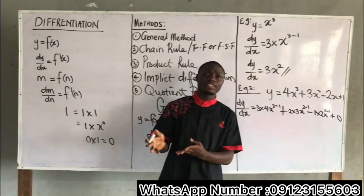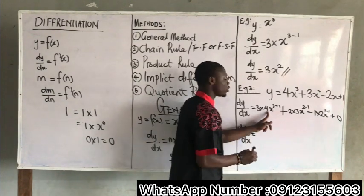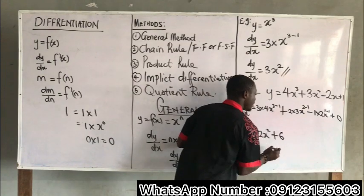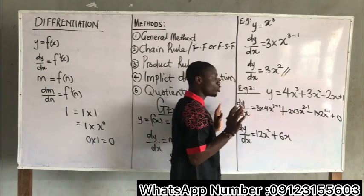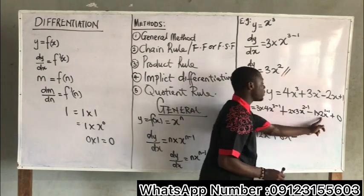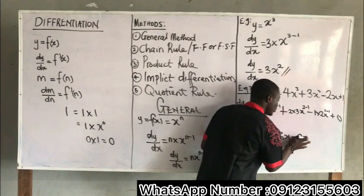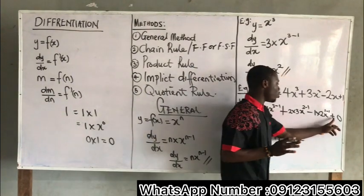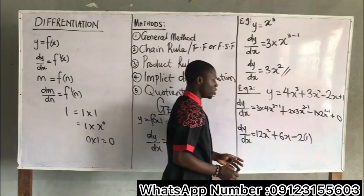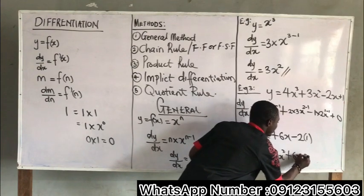So proceeding with the full differentiation: dy over dx equals 12X squared plus 6X minus 2 times X to the power of 0. Since X to the power of 0 equals 1, we don't need to write it. The plus 0 term drops off. Also, we don't write the power of 1 on X since every variable has an invisible power of 1. Therefore, dy over dx equals 12X squared plus 6X minus 2.